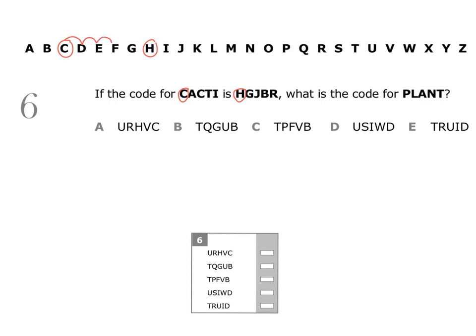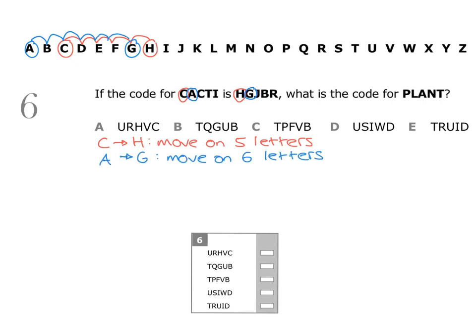Then we have A and we have G. How do we get from A to G? A is here, G is here, so we need to move on six letters. Then we have C again and we have J. How do we get from C to J? We need to move on seven letters.